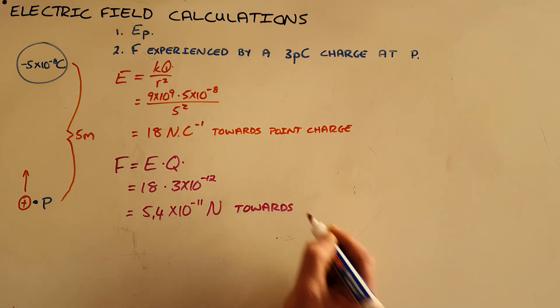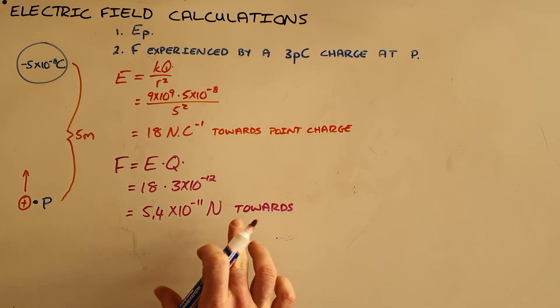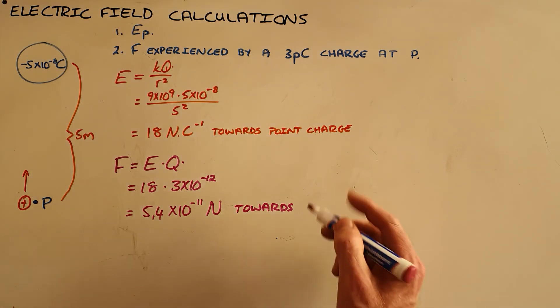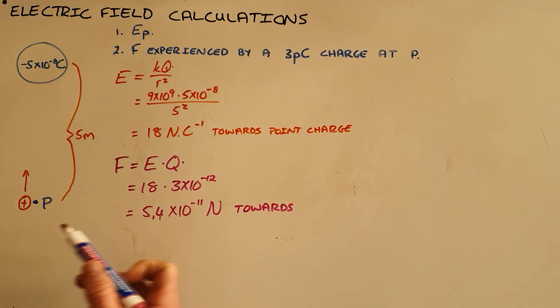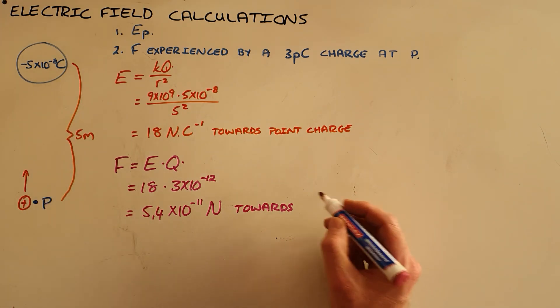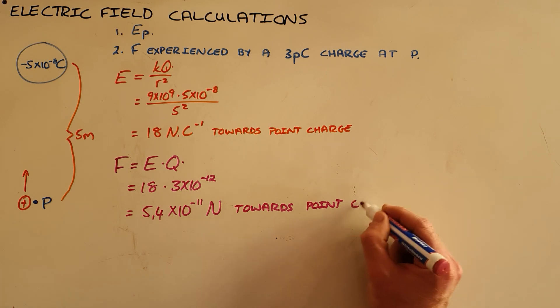Again, I prefer to always give the direction in reference to the charge creating that electric field, so that this is true no matter which direction you look at it from, whereas if you write it as upwards, it would only be true when looking at it in this direction. And so we say the electric field is towards this point charge.